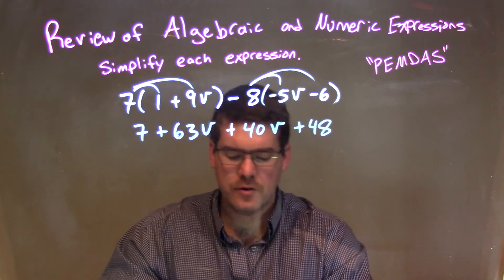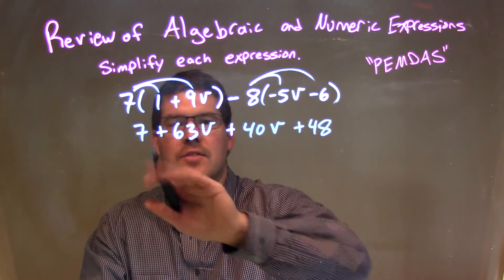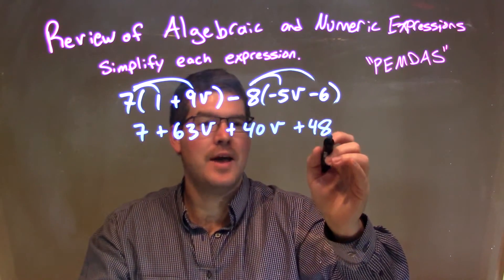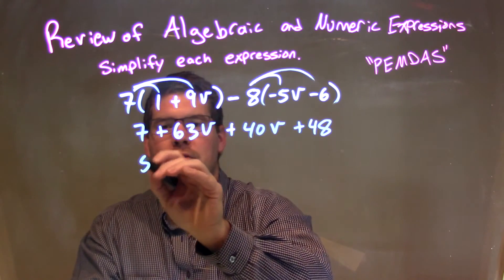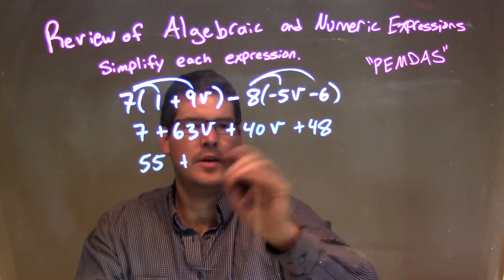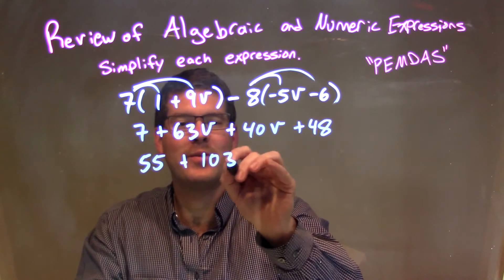So, now what I want to do is combine my like terms. I have 48 and 7, both are numbers. I'm going to combine those together to get 55. Then, I want to combine my 63b and 40b, which comes out to be 103b.